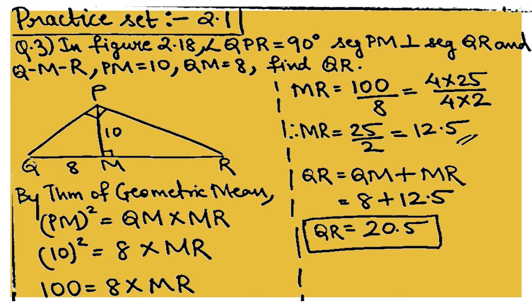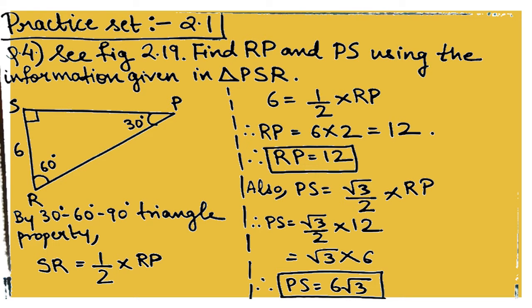Question 4 — see figure 2.19. We need to find RP and PS. Since angle RSP is 90 degrees, RP is the hypotenuse. The triangle PSR has angle SRP = 60°, angle SPR = 30°, angle PSR = 90°, and SR = 6 units. We will use the 30-60-90 degree property.